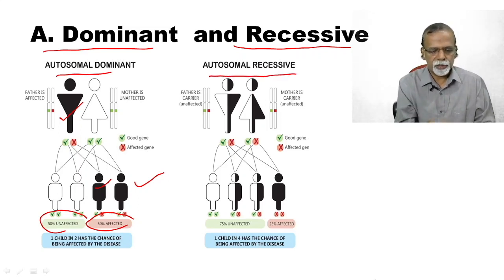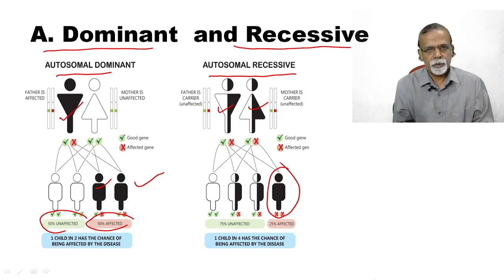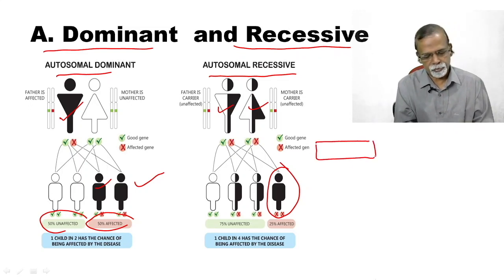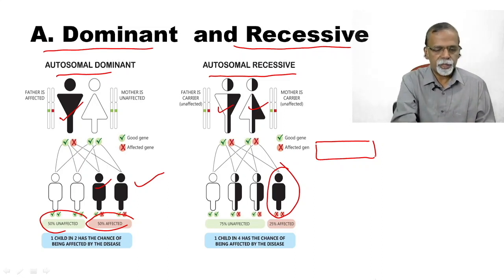This is autosomal recessive. Both parents contain the defective gene. There is one in four chance if there are four offspring. There is one in four, twenty-five percent of the children will get the disease. And there can be skipped in some generations, the disease may not be there also. Details of this you will study when you study genetics. At least this is to impress upon the importance of drawing the family tree.